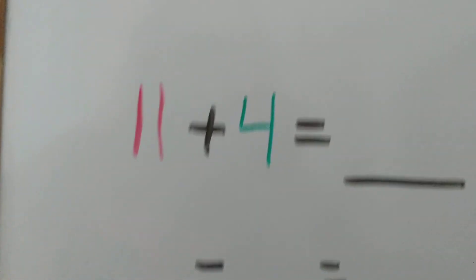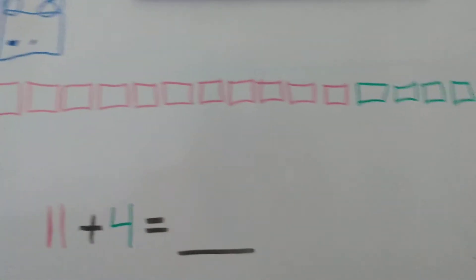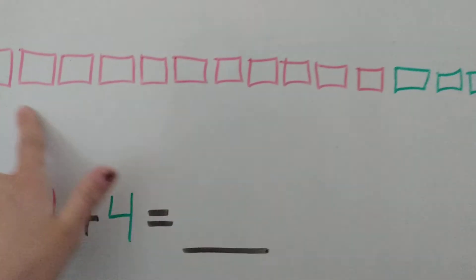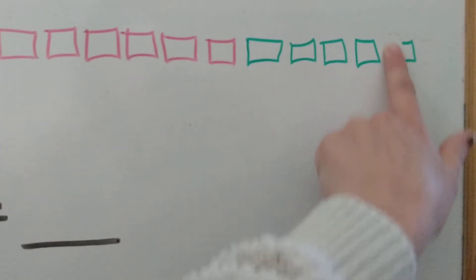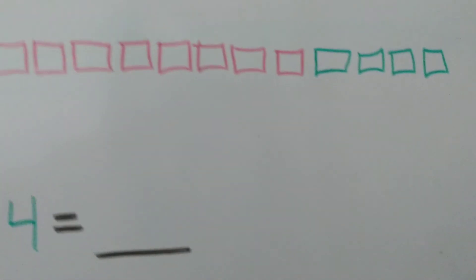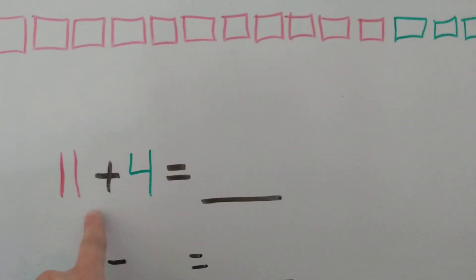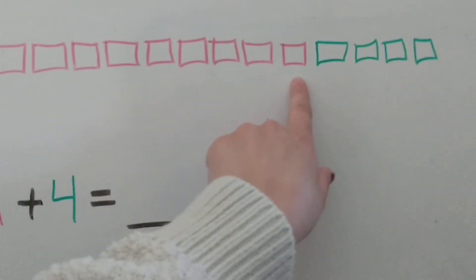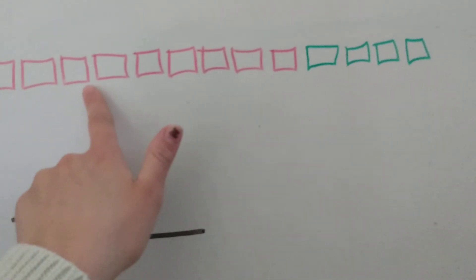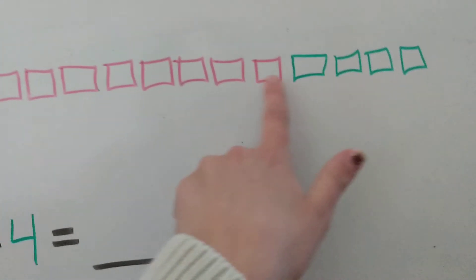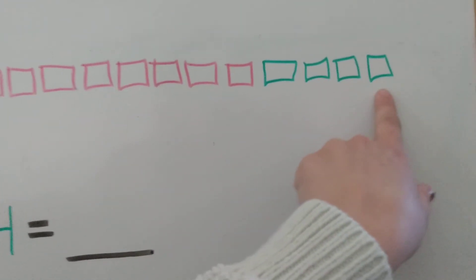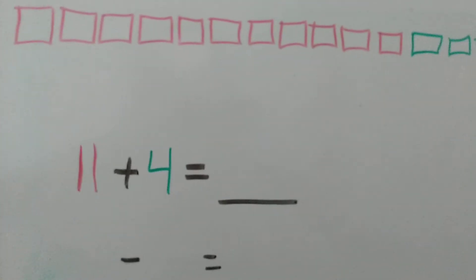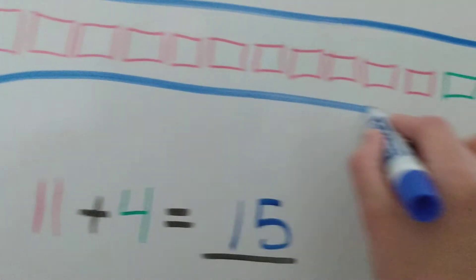Now I have 11 plus 4, and I already drew the squares for us — eleven red squares plus four green squares. I actually drew five by mistake, so that's why we always have to double-check our work. Let's add 11 plus 4: I already know there's eleven here — one, two, three, four, five, six, seven, eight, nine, ten, eleven — and now we add four more: eleven, twelve, thirteen, fourteen, fifteen. So 11 plus 4 equals 15.